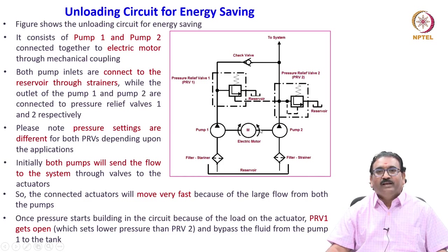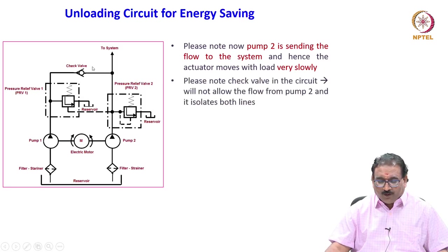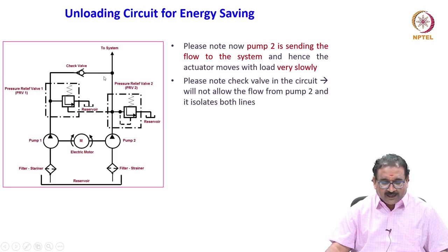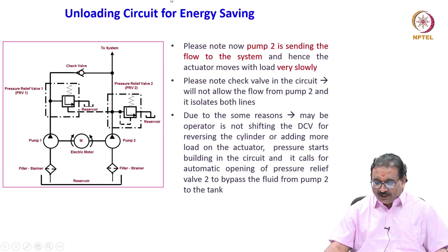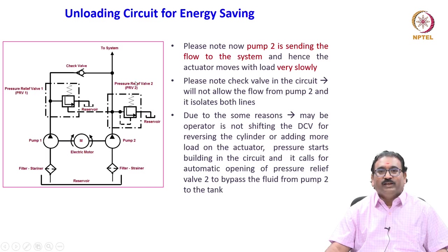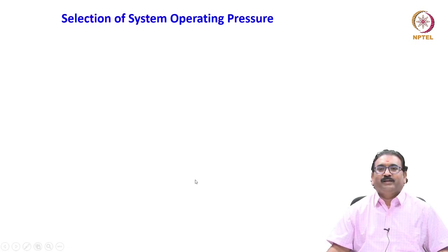Please note that same thing — Pump 2 is sending the flow to the system and hence the actuator moves with load very slowly. The check valve in the circuit will not allow the flow from pump line 2 as it isolates the two lines. If the operator is not shifting the DCV for reversing the cylinder, or adds more load on the cylinder, the pressure starts building and calls for automatic opening of PRB 2 when the set pressure is exceeded from the system. Both pumps will start functioning once the system pressure reduces to the set value. This is the unloading circuit.